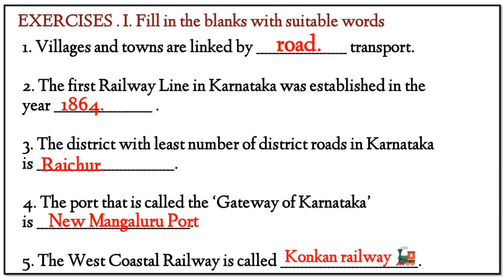3. The district with the least number of district roads in Karnataka is Raichur. 4. The port that is called the Gateway of Karnataka is New Mangaluru Port. 5. The West Coastal Railway is called Konkan Railways.